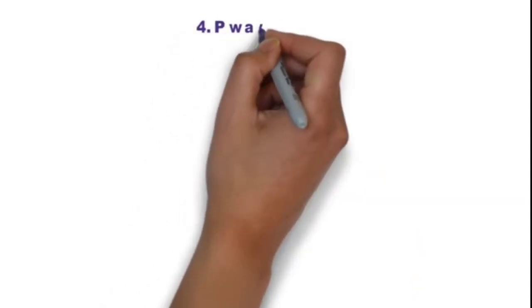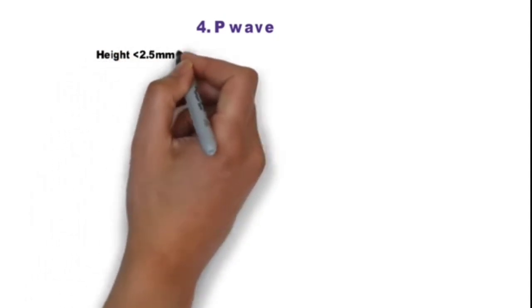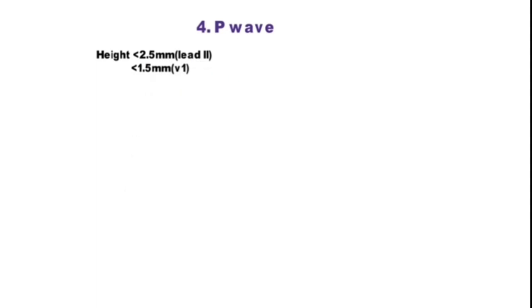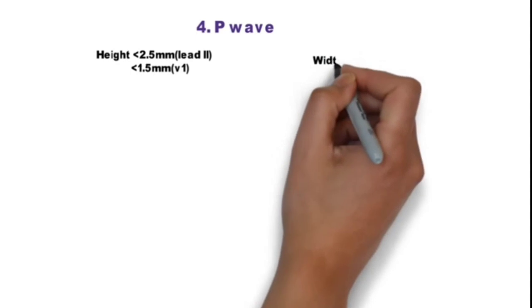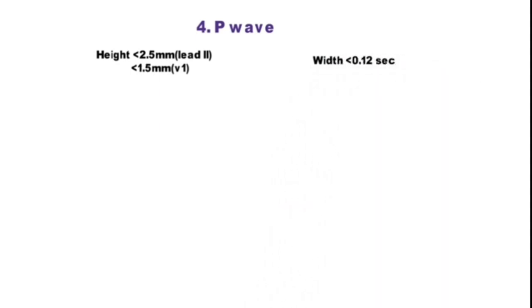Step 4 is P wave. First, see whether P wave is present or not; if present, see the morphology. Height of the normal P wave is less than 2.5 mm in limb leads and less than 1.5 mm in precordial leads, and width should be less than 0.12 second.